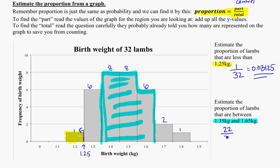So 22 out of 32 would be my fraction. And in the calculator, 0.6875 would be the proportion.